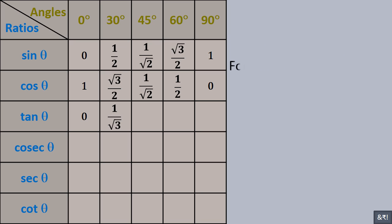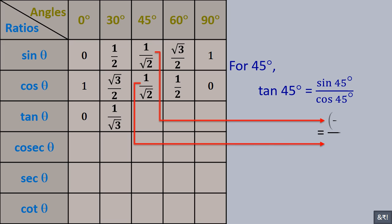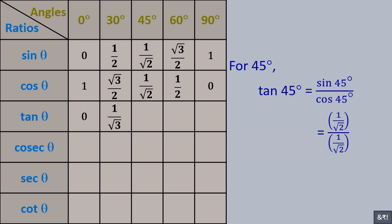For 45 degree, tan 45° = sin 45° / cos 45° = (1/√2) / (1/√2). These cancel, so tan 45° = 1.